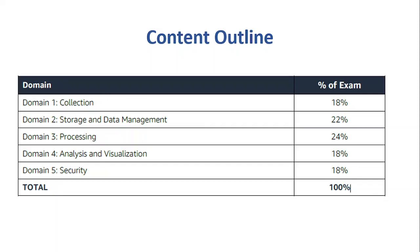The third domain is Processing, and this is the largest portion of the exam — roughly every fourth question is related to processing. Here we need to determine the data processing requirements for various scenarios based on the use case, such as: do we need to do streaming, and if so, what services are we using, or like batch processing and similar.